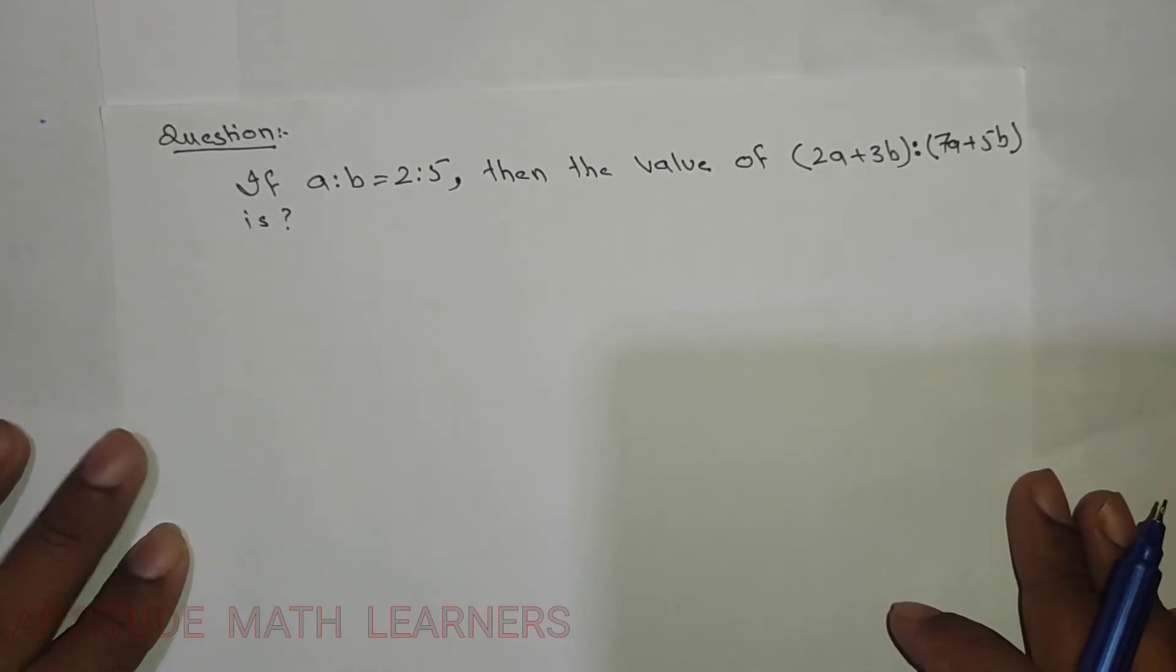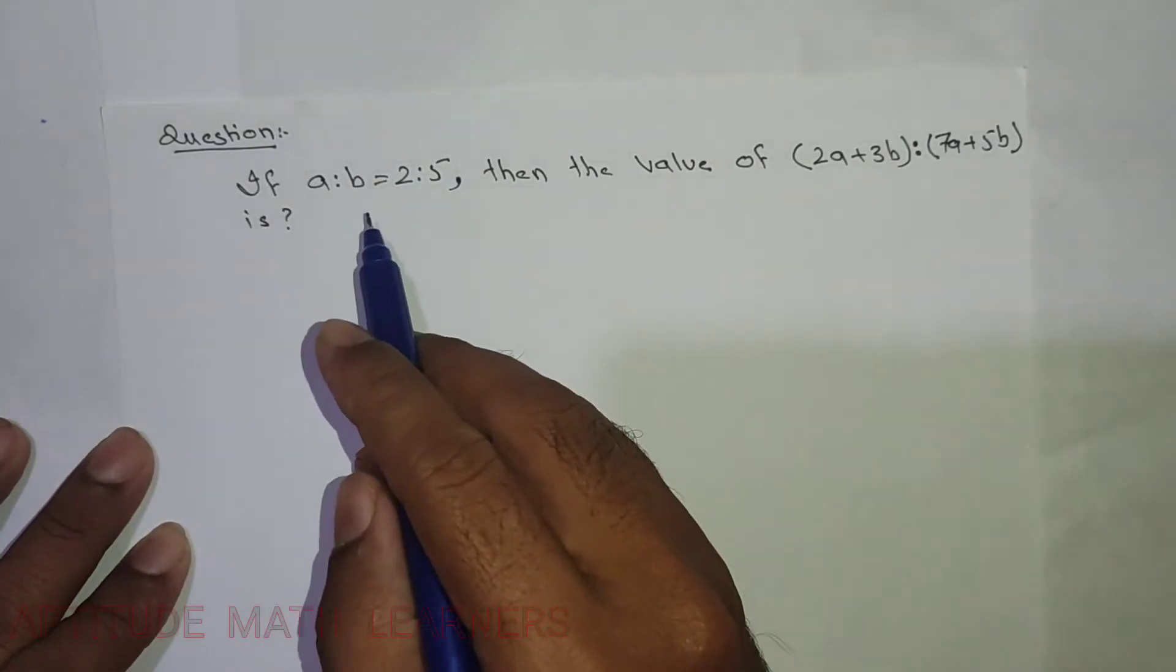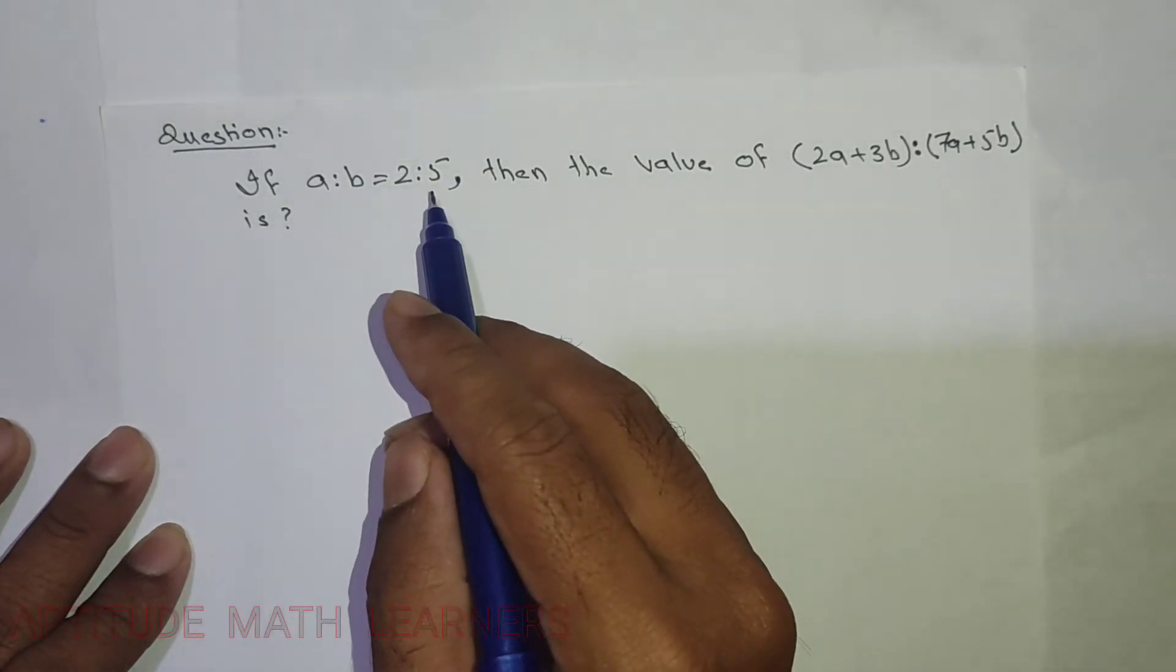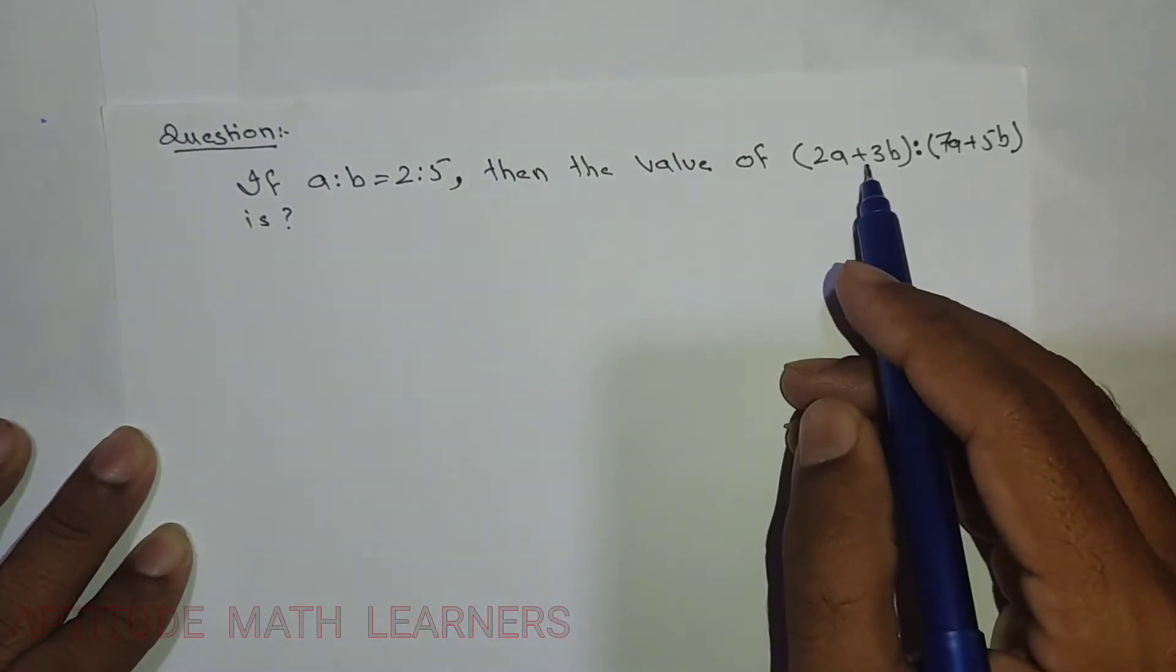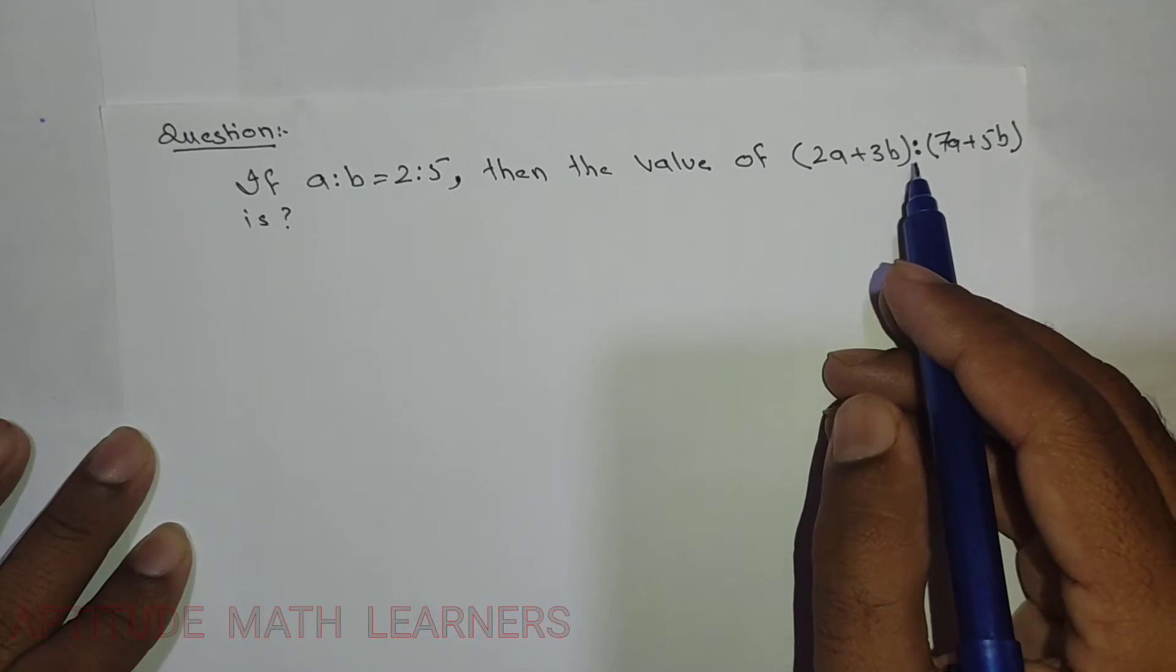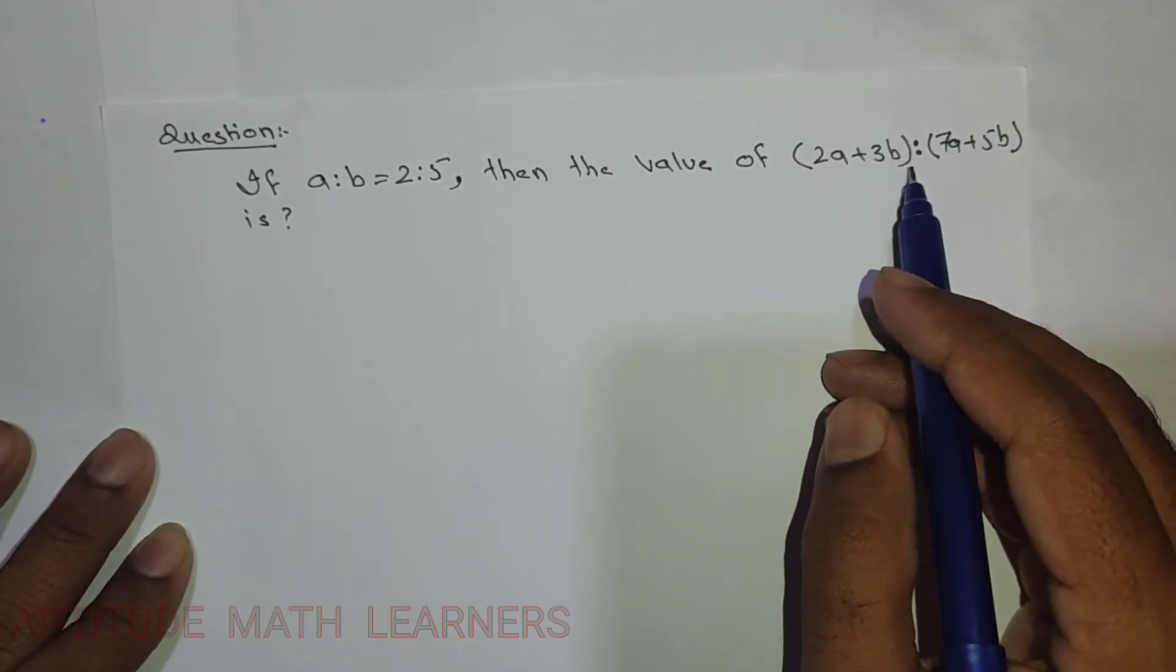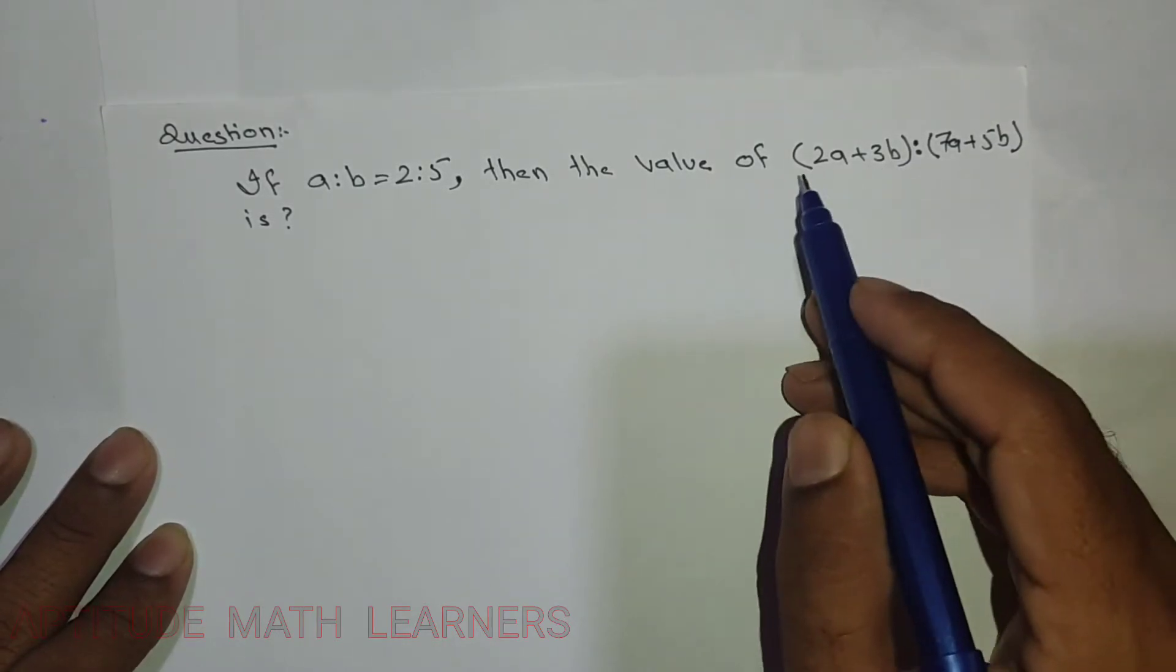The question is on ratios: If a:b = 2:5, then what is the value of (2a+3b):(7a+5b)? We need to find the value of (2a+3b):(7a+5b).